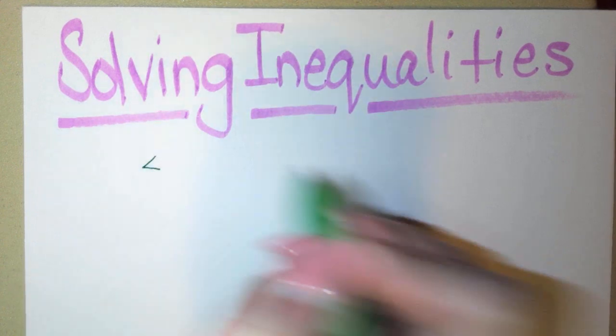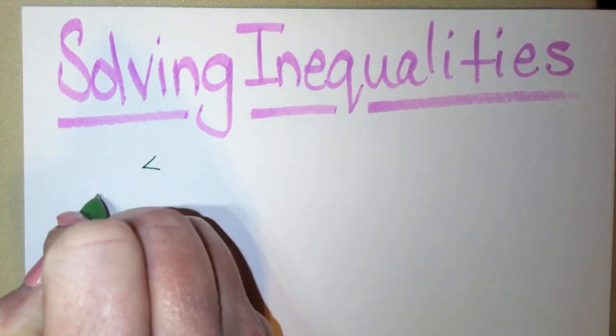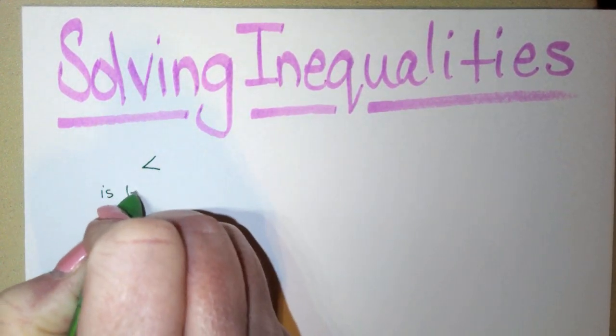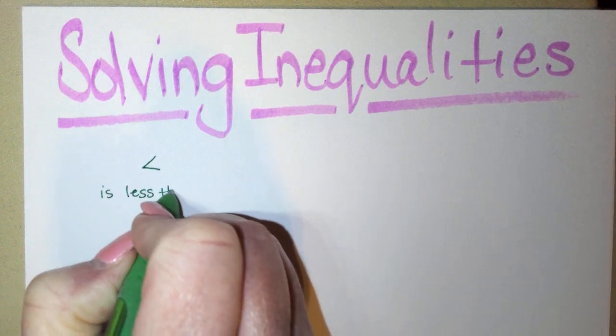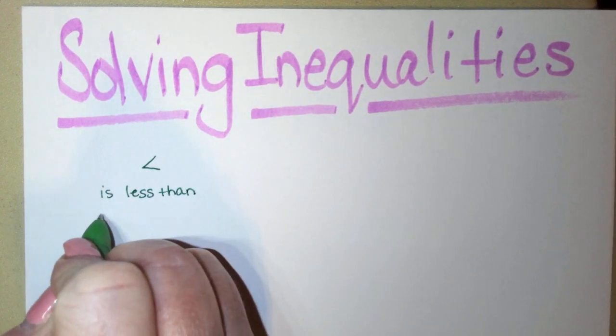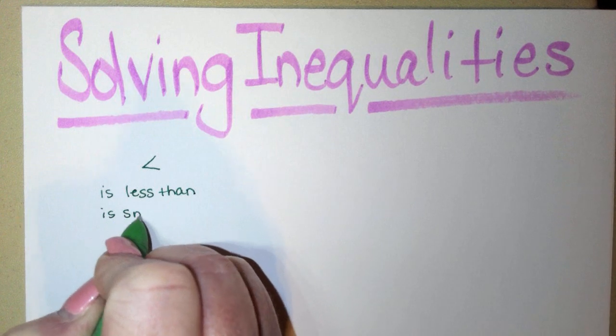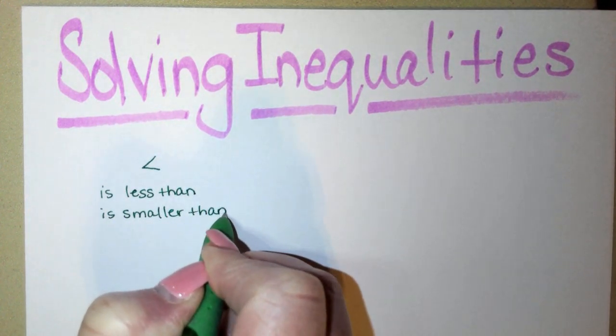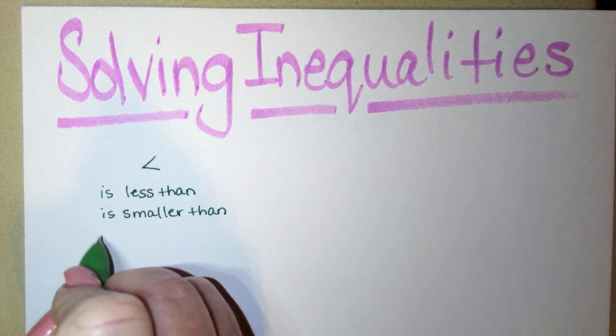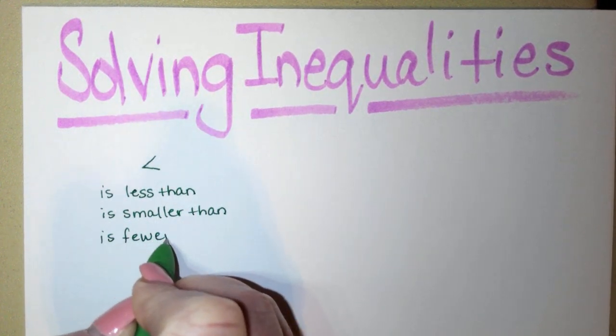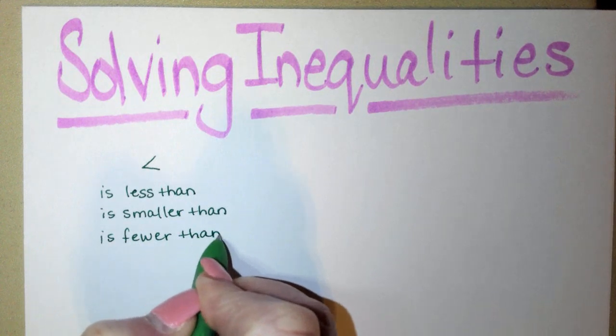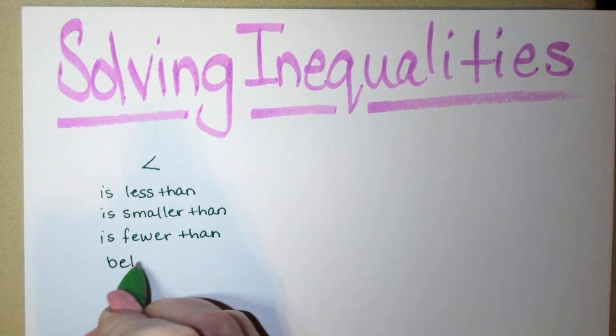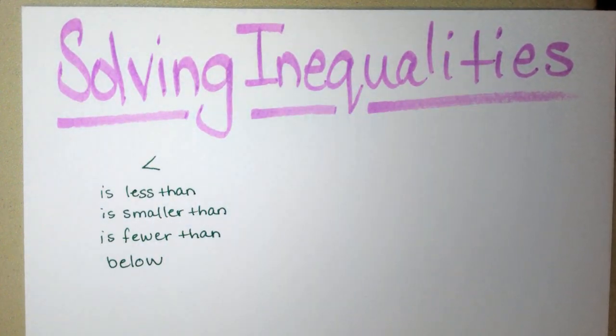The first symbol we can use is this symbol. This is is less than. It could also mean is smaller than, is fewer than, or it could state that it is below. All of those mean is less than.